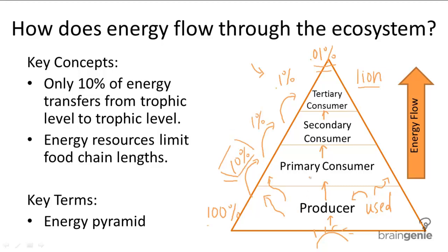Whereas secondary and tertiary consumers have to eat more to gain the same amount of energy. So remember, eating lower on the food web and closer to the original source of energy is a more efficient intake of energy. As a quick summary: only 10% of energy transfers from trophic level to trophic level, energy resources limit food chain lengths, and the shrinking of the energy level from trophic level to trophic level is represented through the energy pyramid.